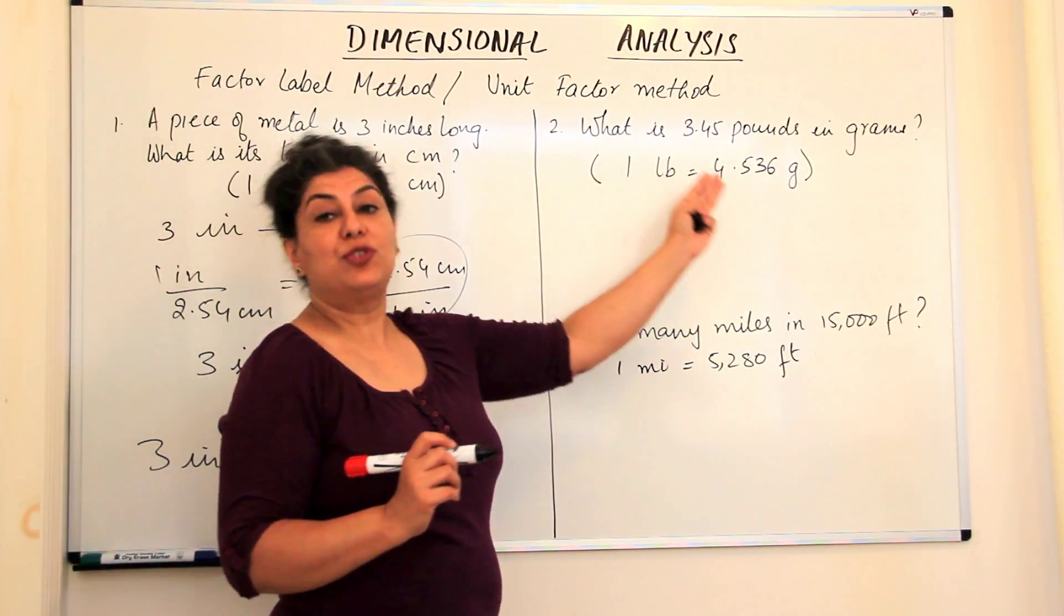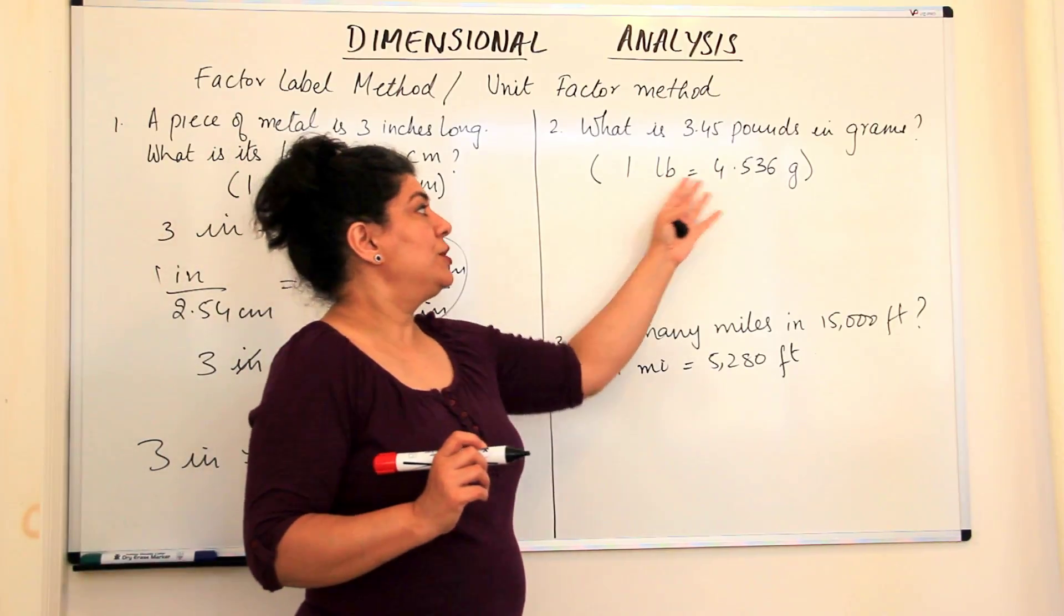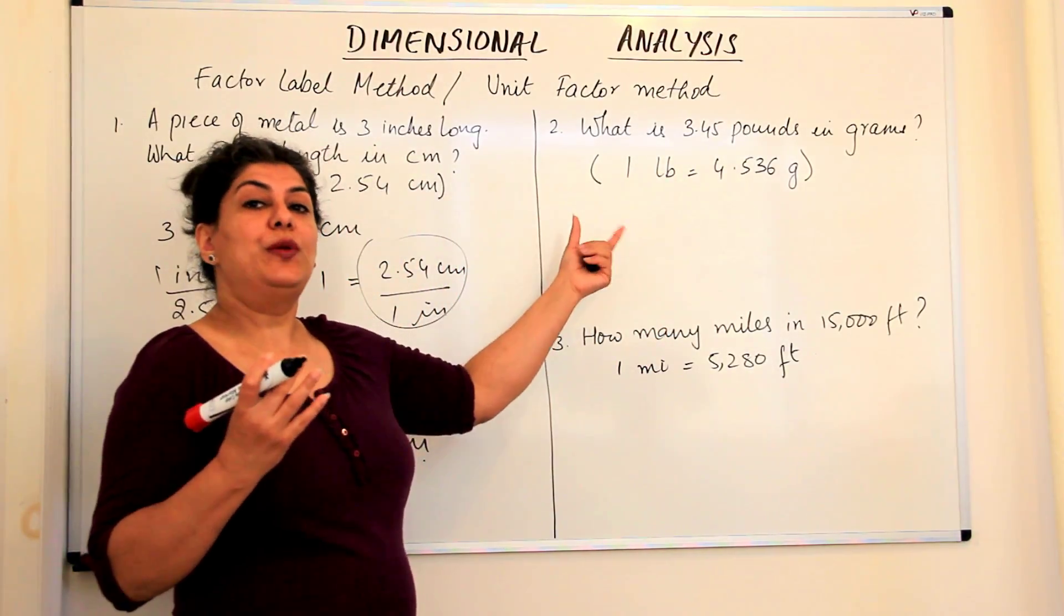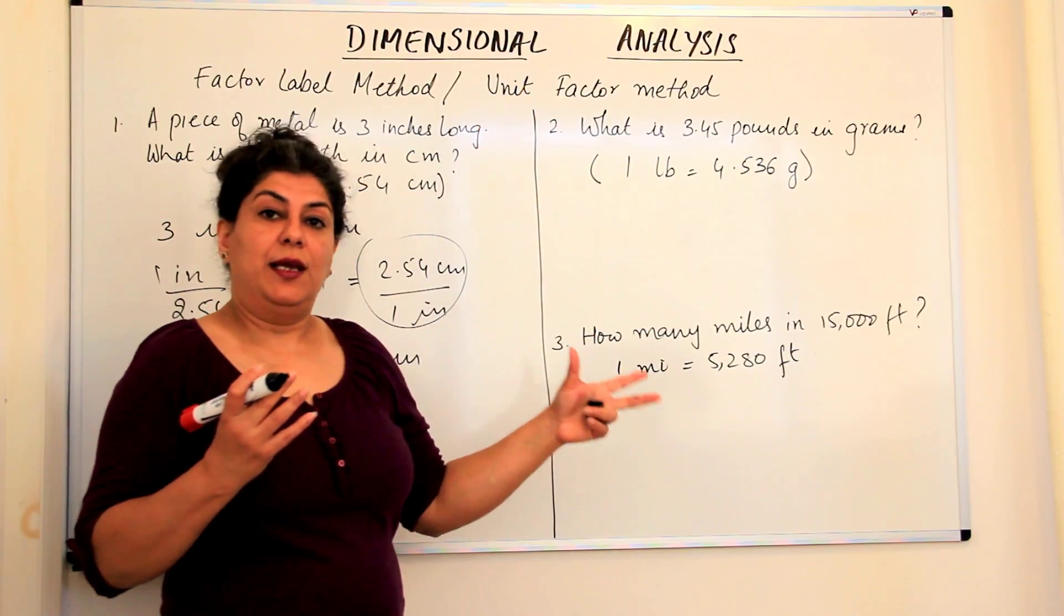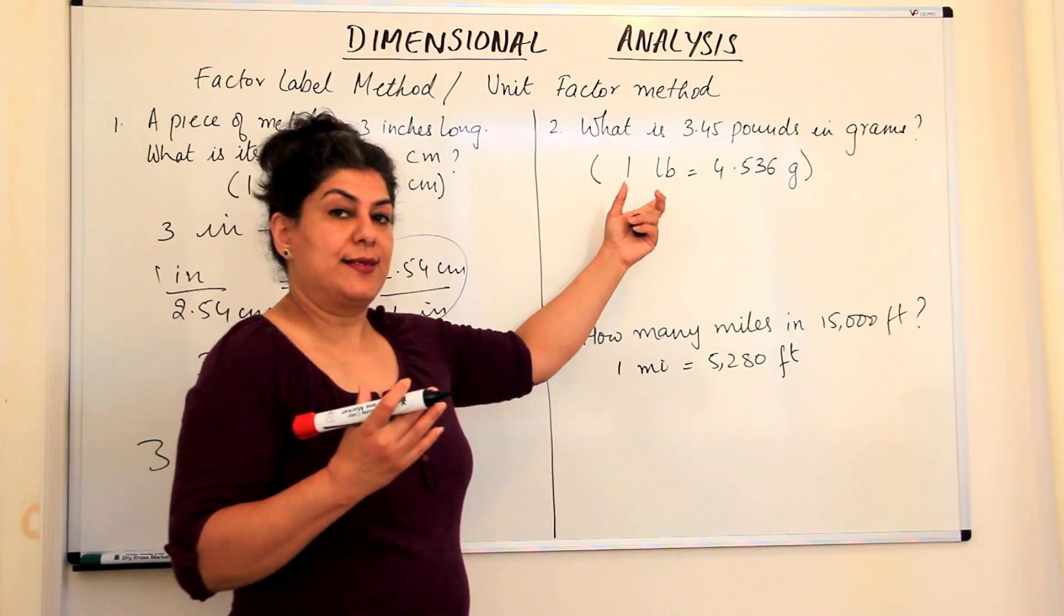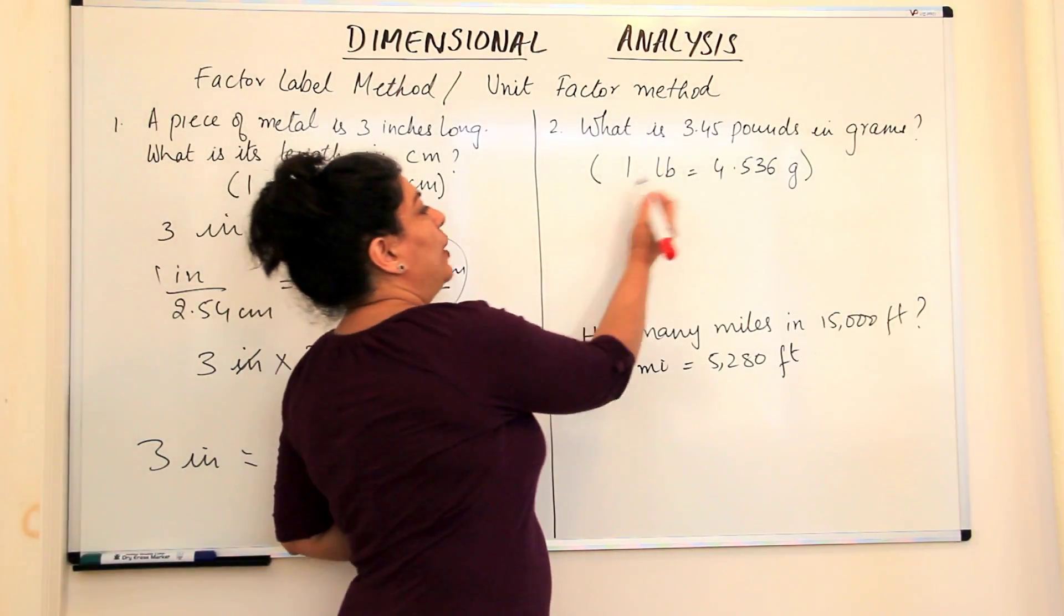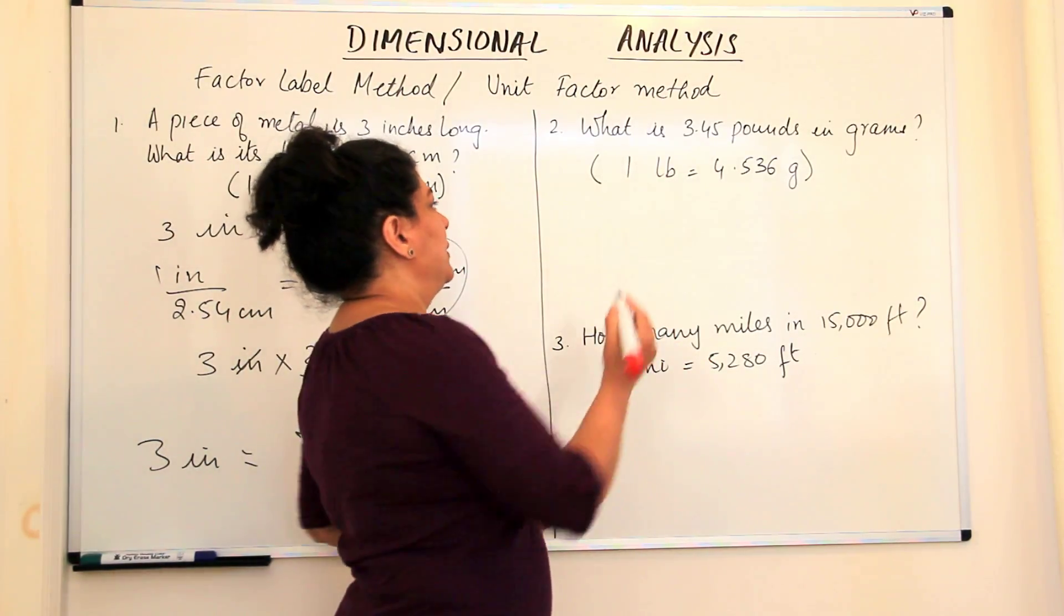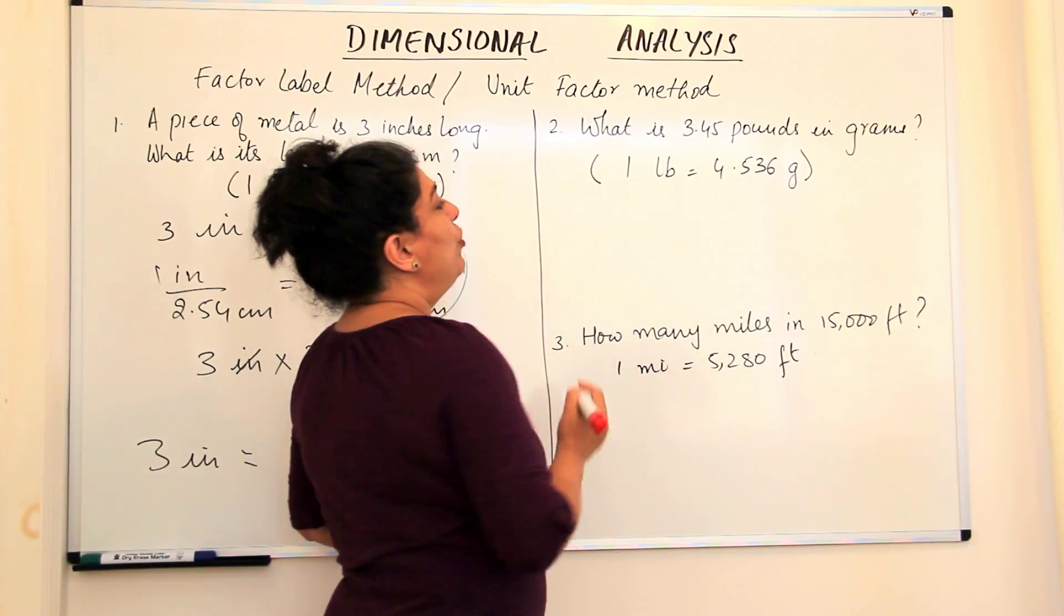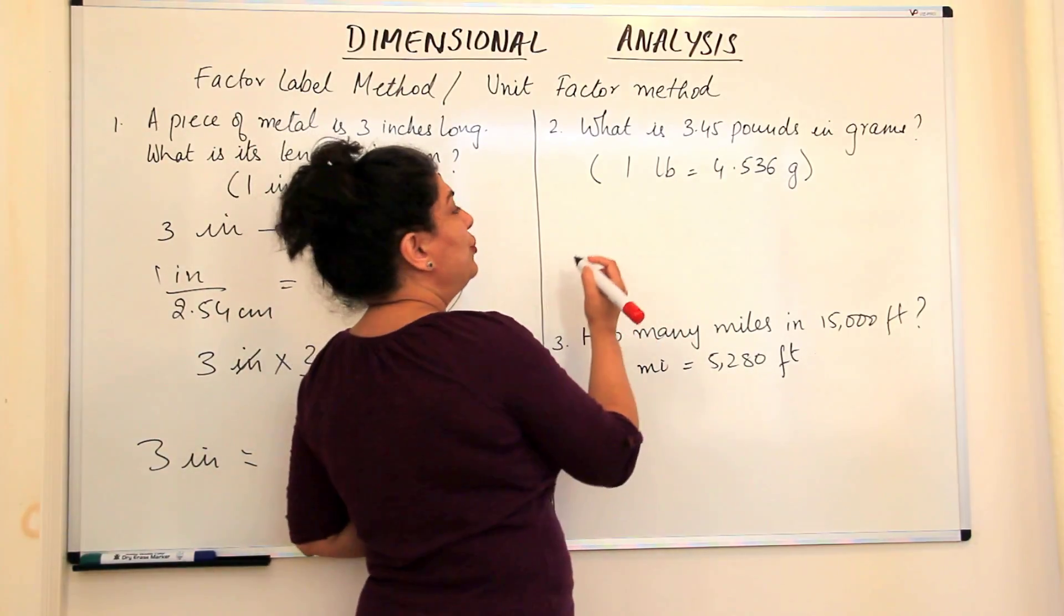What is 1 pound equal to? These equations are usually given in conversion tables, and during the exam you might get the conversion. So these conversion units are 1 pound = 4.536 grams. I get two unit factors.